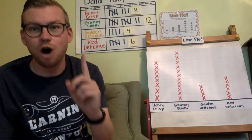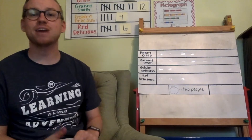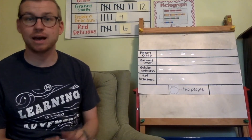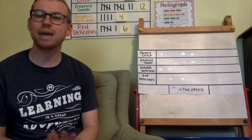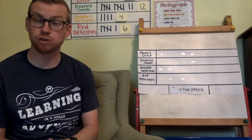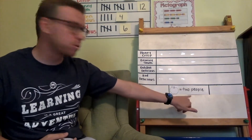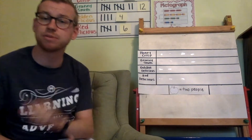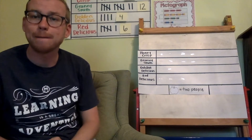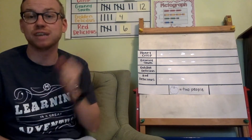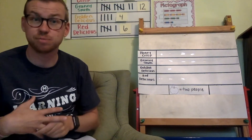This is the line plot. We have one more graph to make together, and that's a pictograph. The pictograph is very different than any of the other graphs we've done. There's a number two here telling us that every apple picture is going to represent two people. There are no numbers going up the sides — instead of X's or bars, we're using pictures to display the data.